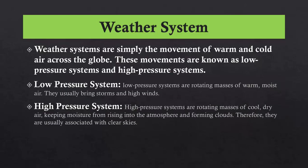What is a weather system? Weather systems are simply the movement of warm and cold air across the globe. These movements are known as low pressure systems and high pressure systems. The low pressure system consists of rotating masses of warm moist air — they usually bring storms and high winds. Whereas the high pressure system consists of rotating masses of cool dry air, keeping moisture from rising into the atmosphere and forming clouds, and is usually associated with clear skies.